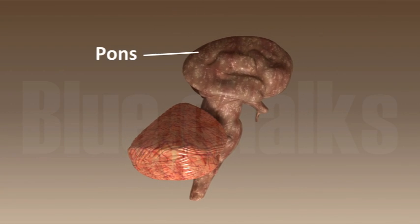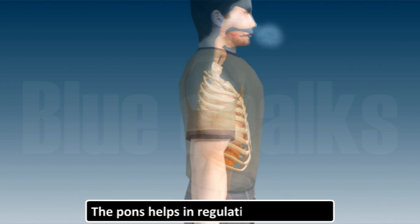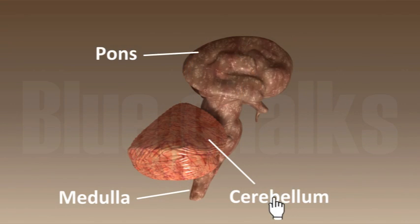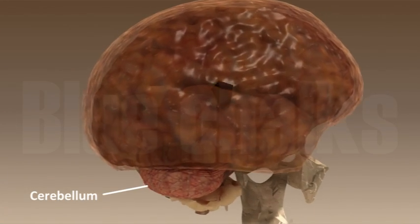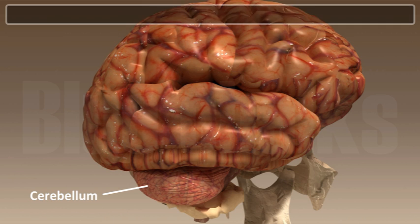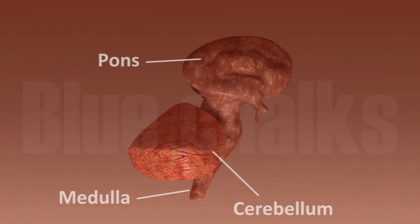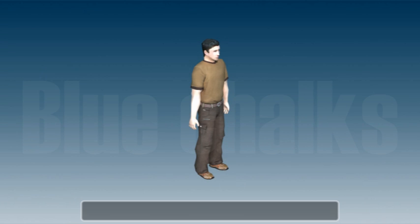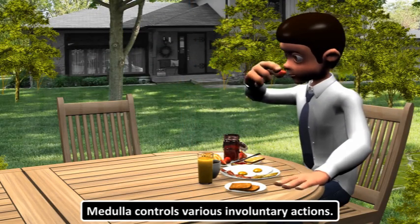The hindbrain consists of pons, cerebrum and medulla. The pons help in regulating respiration. Think about activities like walking in a straight line, riding a bicycle, picking up a pencil — these are controlled by the cerebrum of the hindbrain. The cerebrum helps in maintaining the posture and balance of the body. Medulla controls various involuntary actions like breathing, blood circulation, blood pressure, mouth watering, vomiting and salivation.